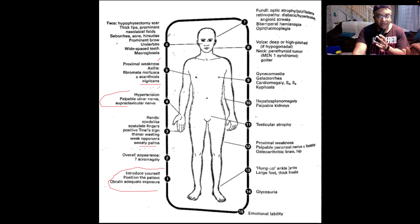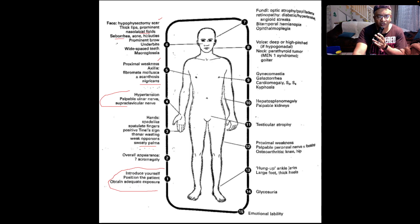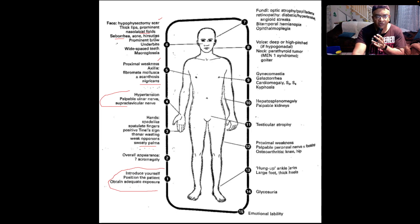Working your way up to the face, look for a hypophysectomy scar. Check for thick lips and prominent nasolabial folds, for seborrhea, for acne, hirsutism, a prominent brow, underbite, wide-spaced teeth, and macroglossia.